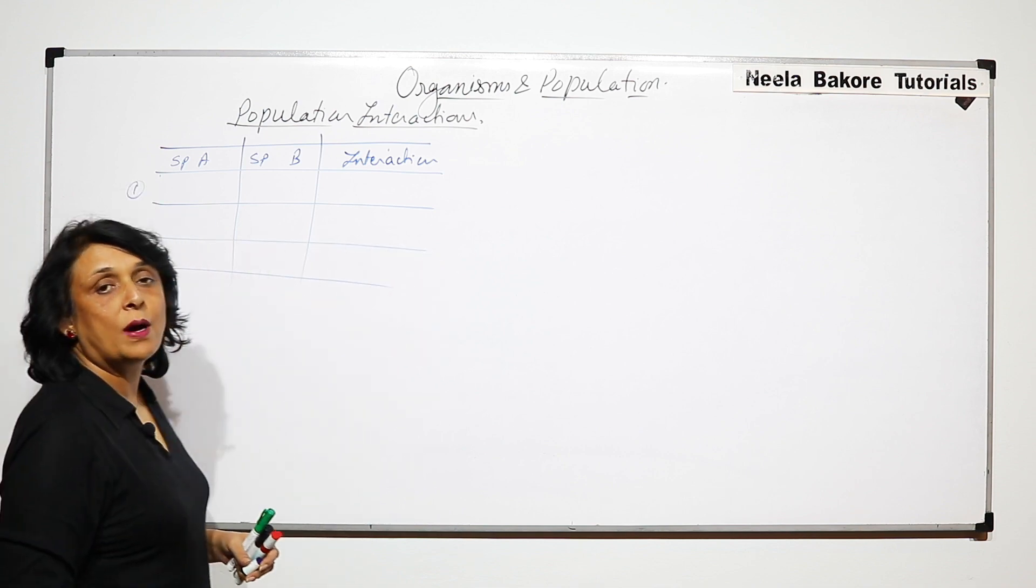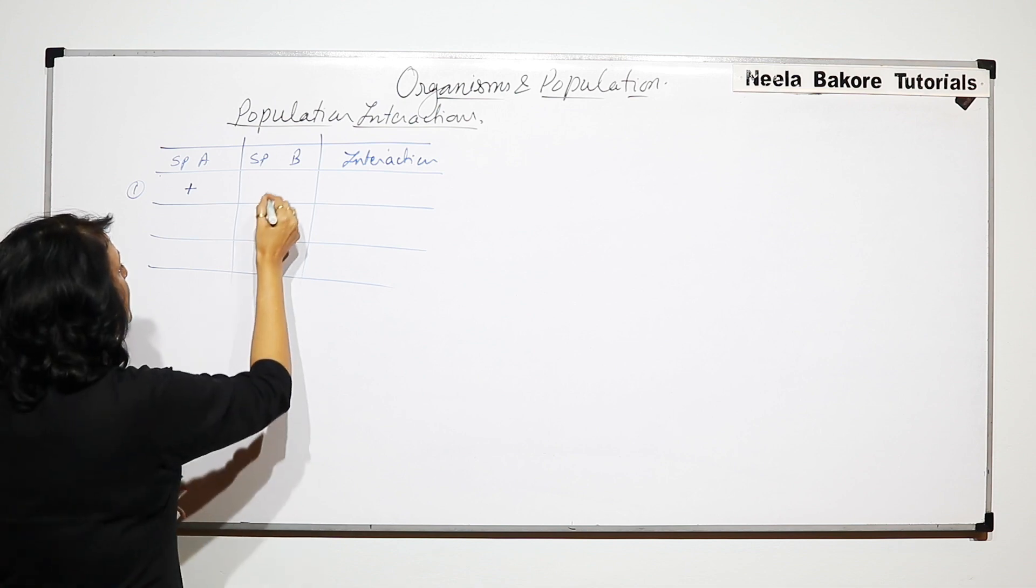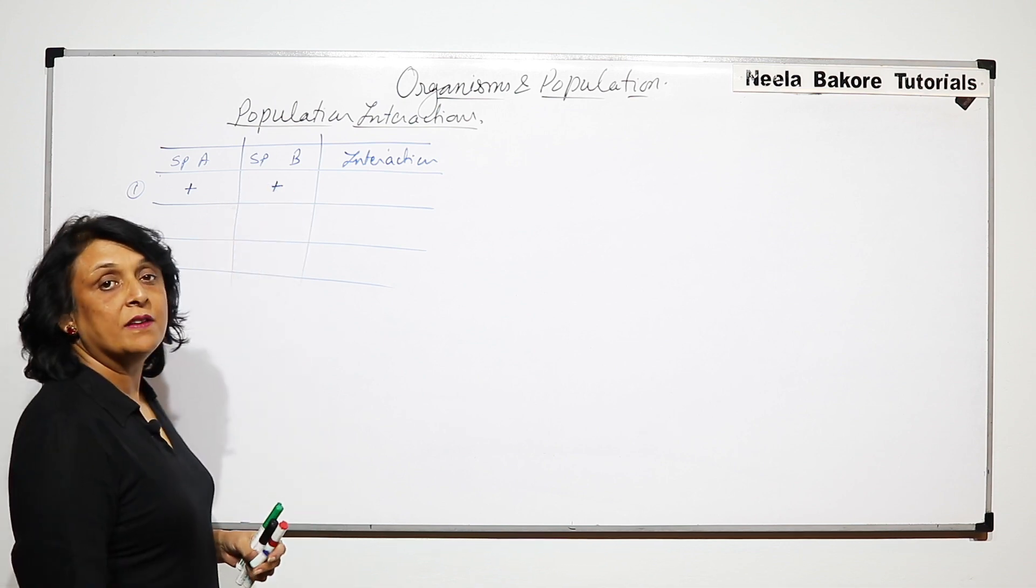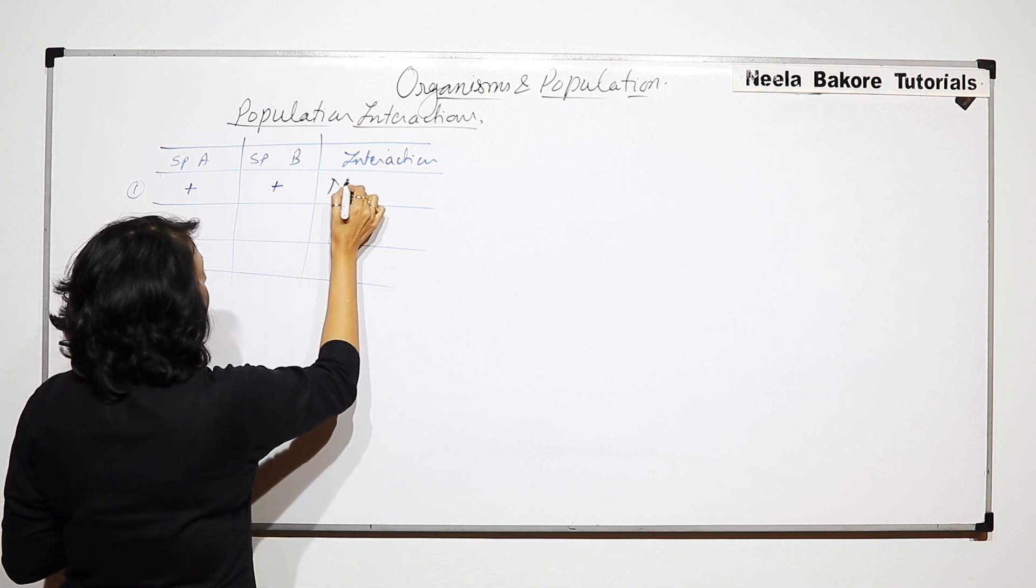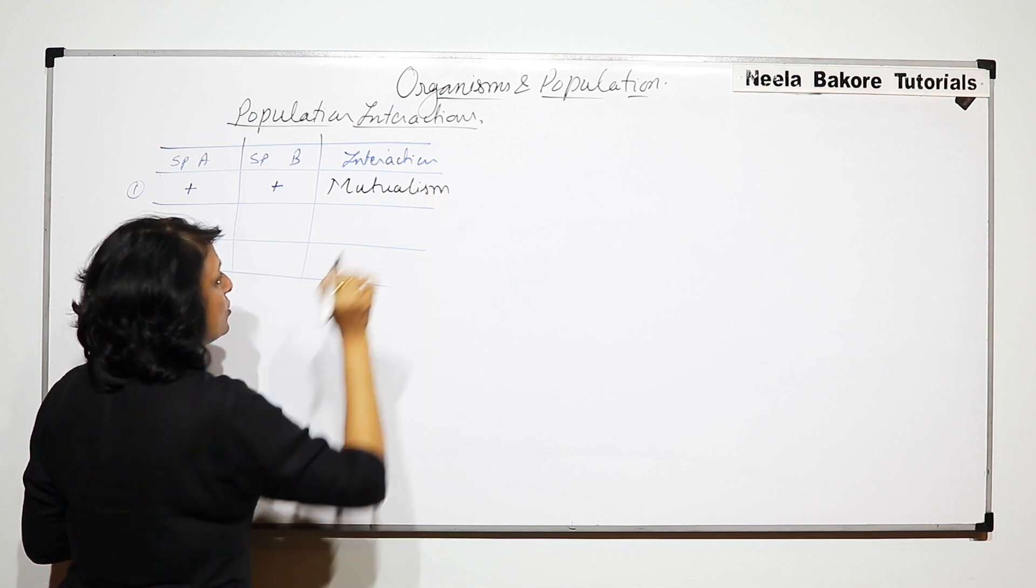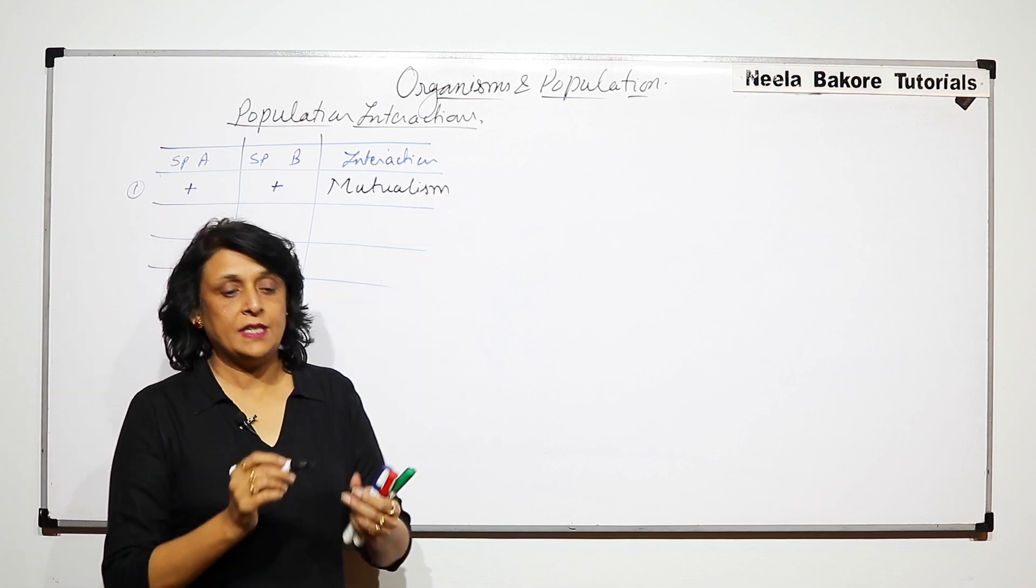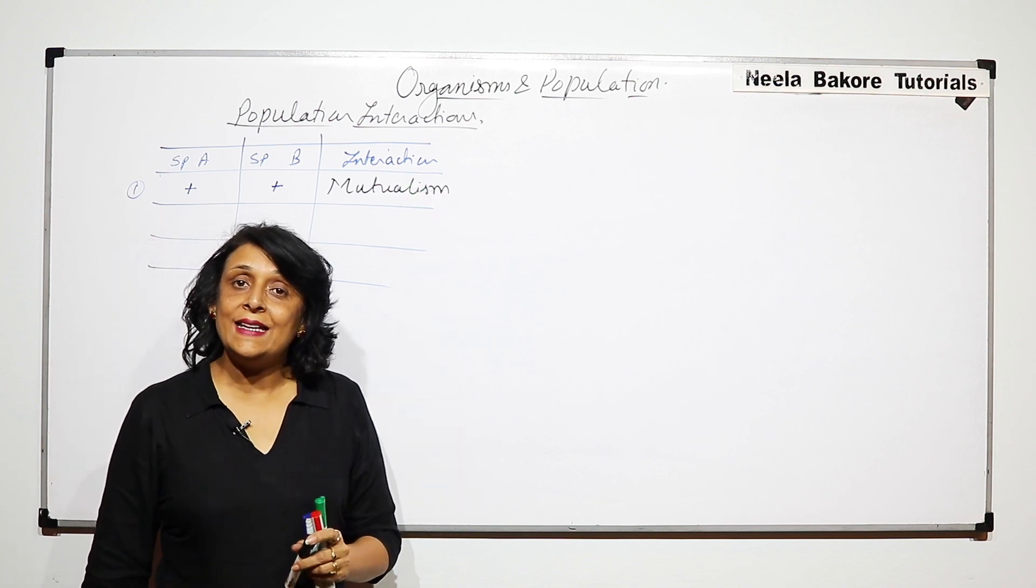The first one we are talking about is species A is benefited and species B is also benefited. Then in that case, the interaction is known as mutualism. So this is one interaction and every time we will take one, we will discuss this particular interaction and its examples.